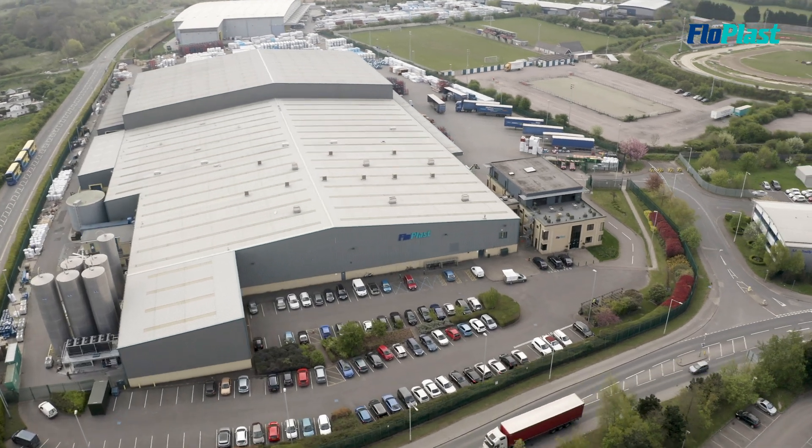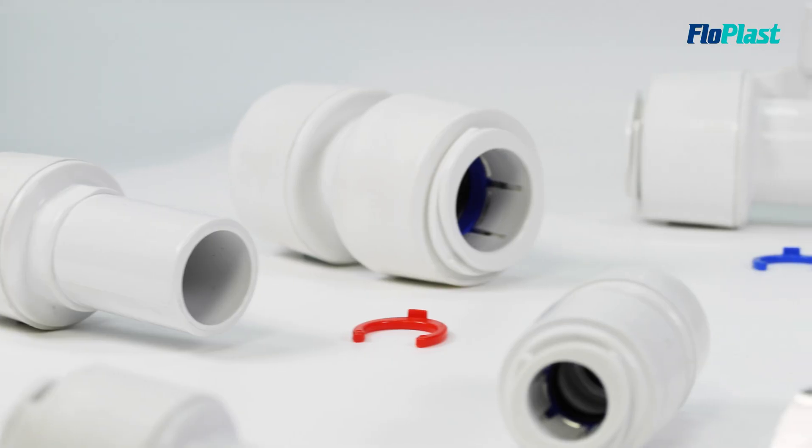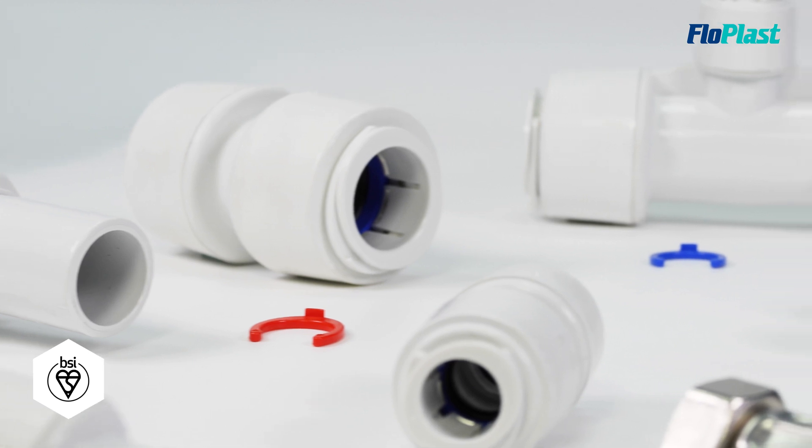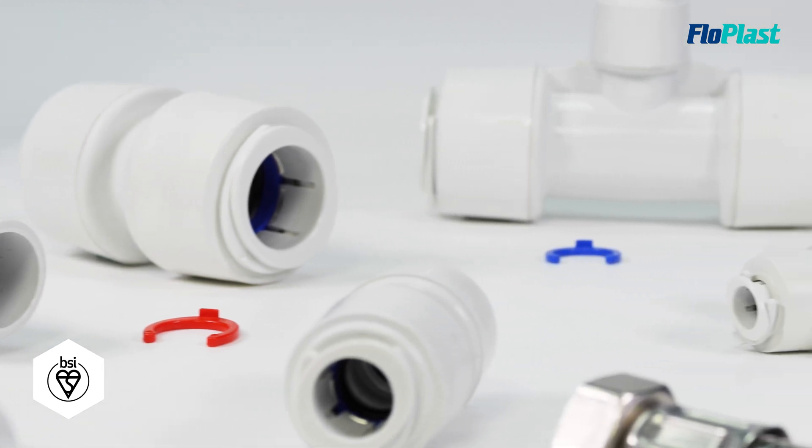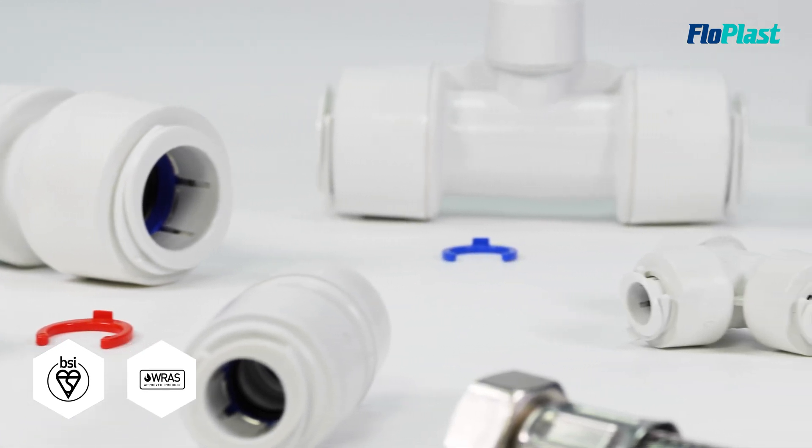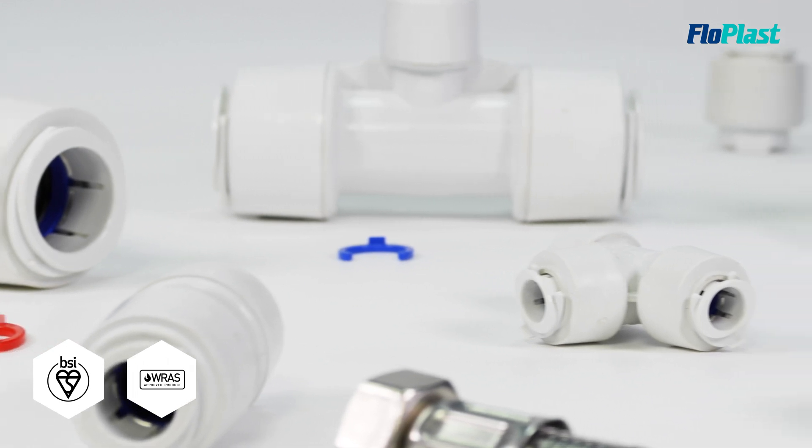Manufactured at FlowPlast's UK production facility in Sittingbourne, Kent, the Flowfit Plus range is BSI kitemarked to BS7291 parts 1, 2 and 3 and fully RAS certified for use with both plastic and copper pipe.